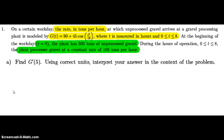The calculator will give us a numeric answer. The correct units for that are tons per hour squared. The meaning of that in the context of this problem is the rate of change of g — how fast the tons per hour rate is changing itself per hour. That concludes part a.